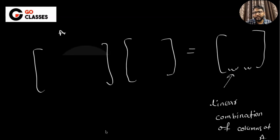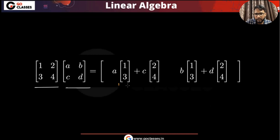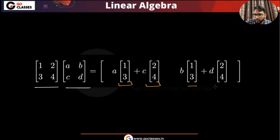This is a very, very useful interpretation and we will be using it a lot. If you multiply this matrix with this matrix, then the first column of the result is basically a linear combination of the columns of A — with coefficients coming from the first column of B — and the second column is also a linear combination of the columns of A.